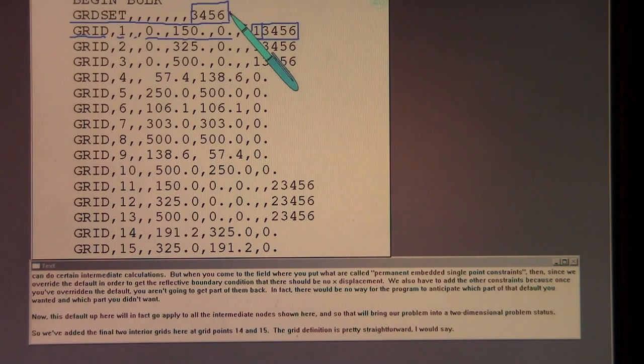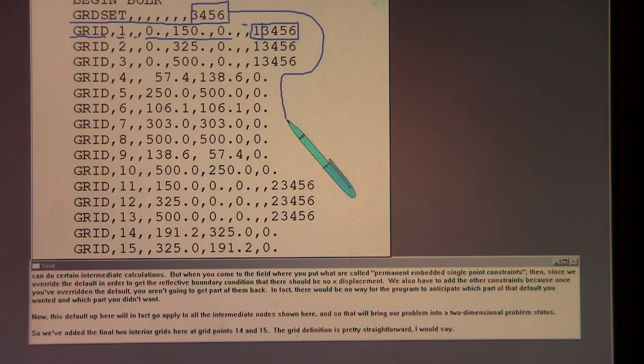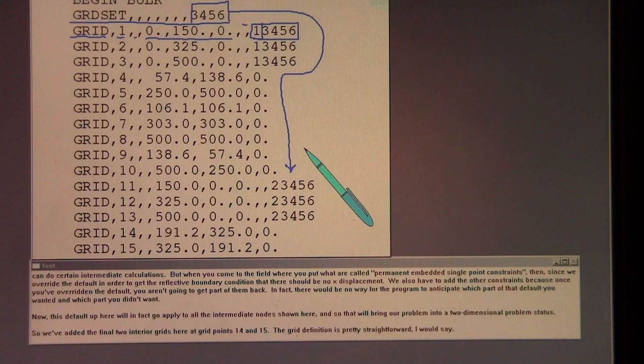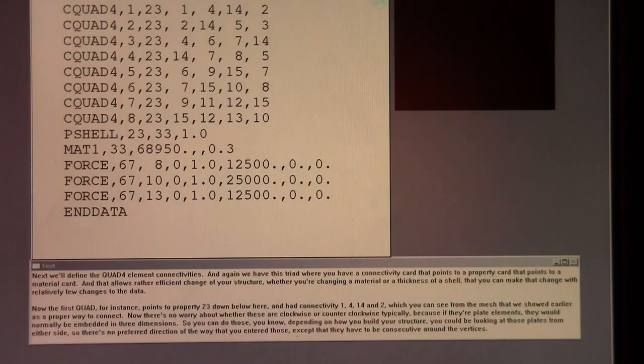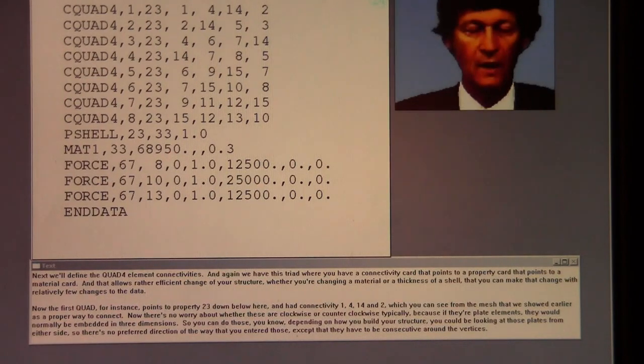Now, this default up here will, in fact, apply to all the intermediate nodes shown here, and so that will bring our problem into a two-dimensional problem status. So, we've added the final two interior grids here at grid points 14 and 15. The grid definition is pretty straightforward, I would say.